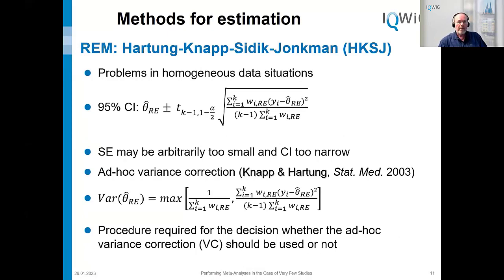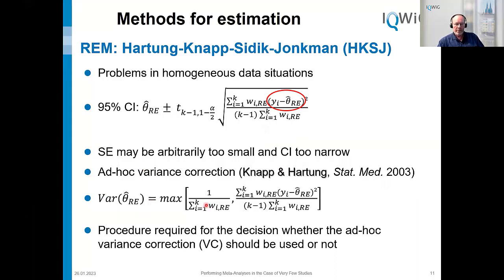An additional problem is that the standard errors of Hartung-Knapp-Sidik-Jonkman can also be too small. In homogeneous data situations, the effect estimates of all studies are very similar to each other and to the average, which means a key term in the formula can get very small. In these cases, standard errors may be arbitrarily too small and confidence intervals too narrow. A solution published by Knapp and Hartung in 2003 is to use an ad hoc variance correction, but in practice you need a decision procedure for whether this correction should be applied.